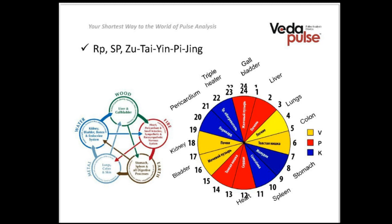According to Ayurvedic tradition, the spleen channel belongs to the Kapha category. It can regulate humidity and dryness, and the balance between them in the body. It is very sensitive to moisture. It works together with the kidney to balance our fluids — they are both responsible for this together.